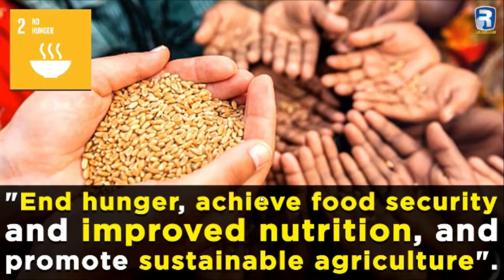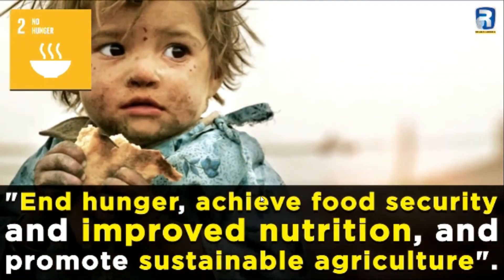Goal Number 2 advocates about zero hunger. The punchline is: end hunger, achieve food security and improve nutrition, as well as promote sustainable agriculture systems for our future generations. So hunger should be eliminated and the agriculture system should be improved for our next generations.